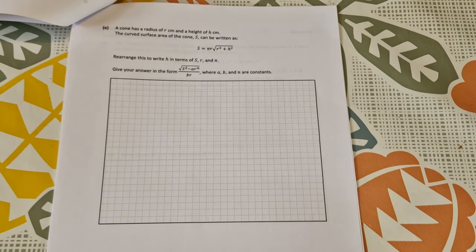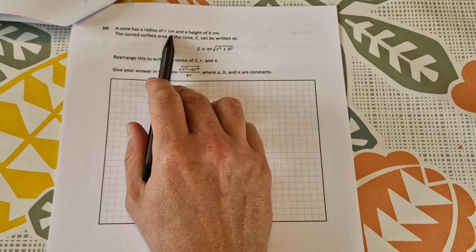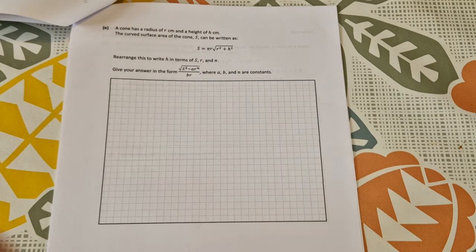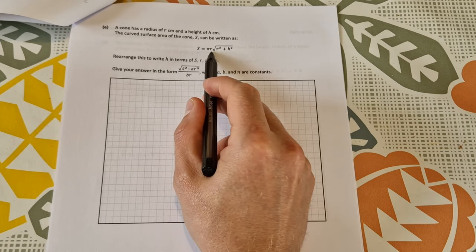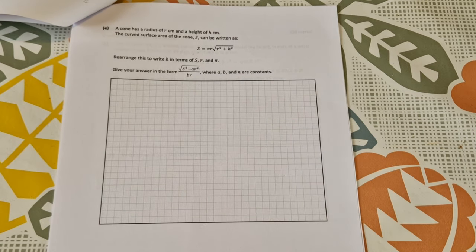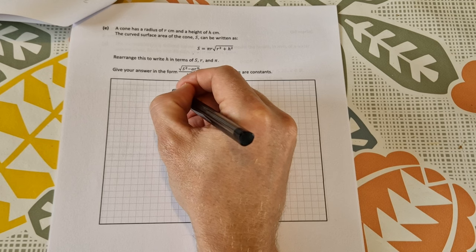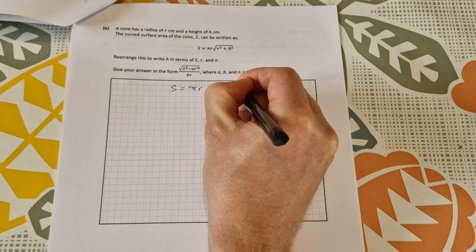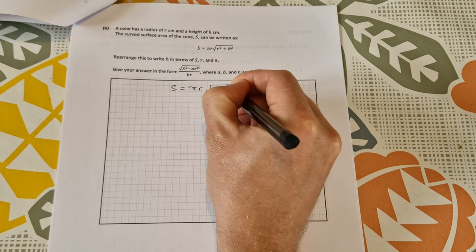On to part E. So a cone has radius 4 centimeters and a height of h centimeters. The curved surface area of the cone s can be written as s is equal to pi r times the square root of r squared plus h squared. Rearrange this to write h in terms of s, r and pi and give your answer in this form where a, b and n are constants.